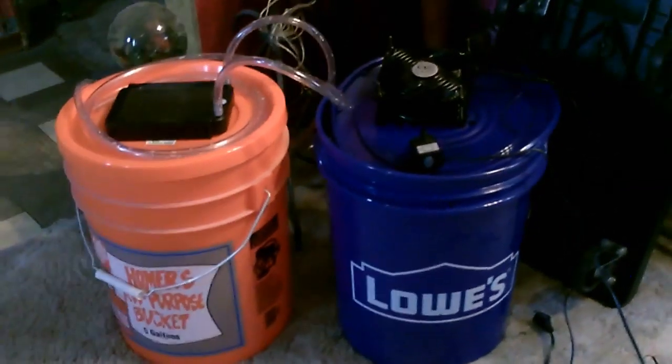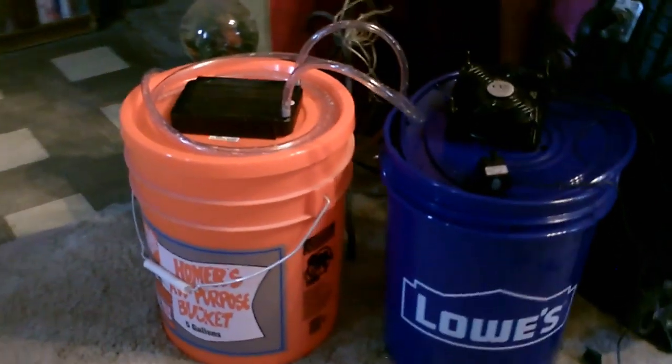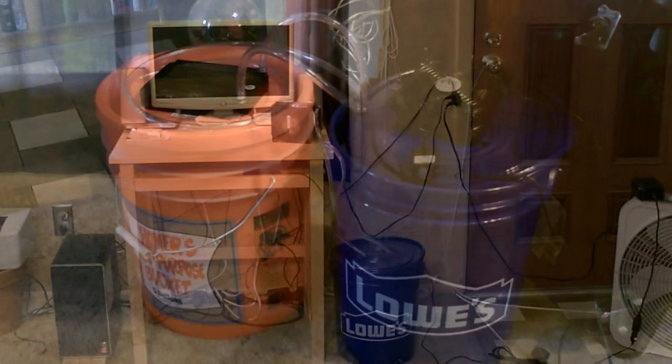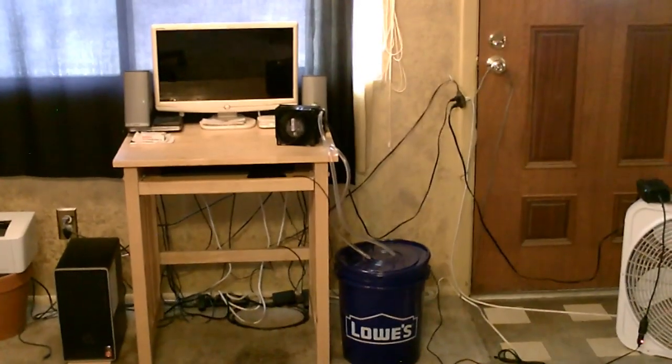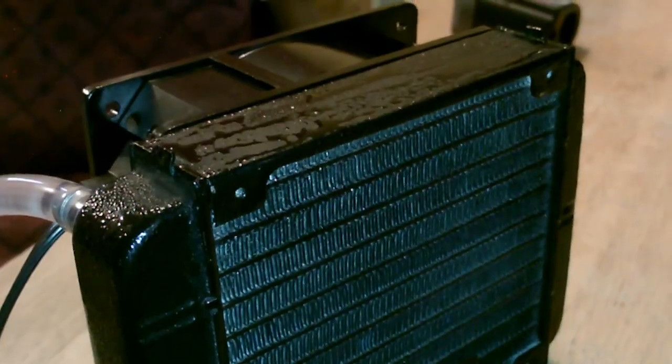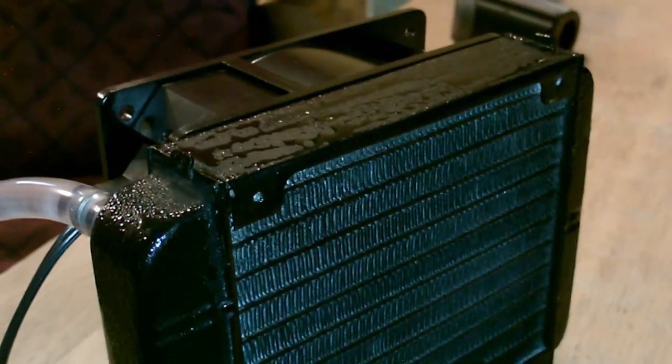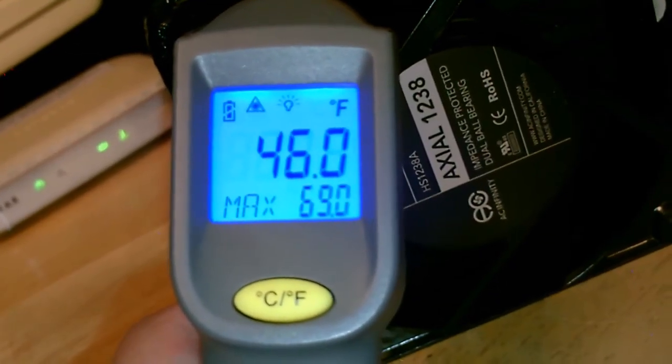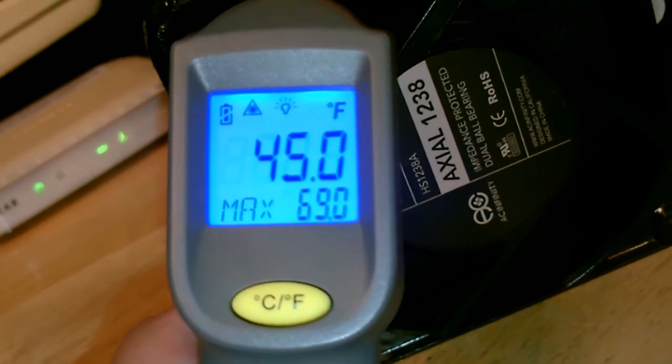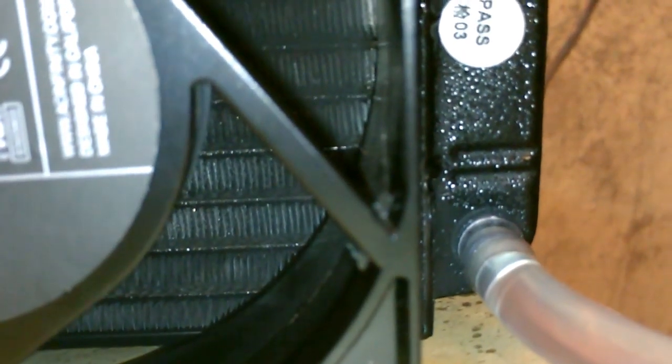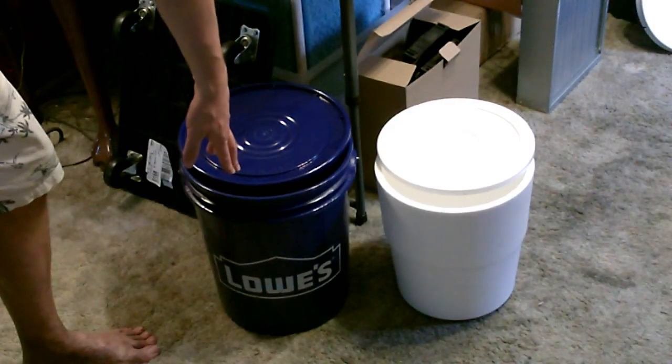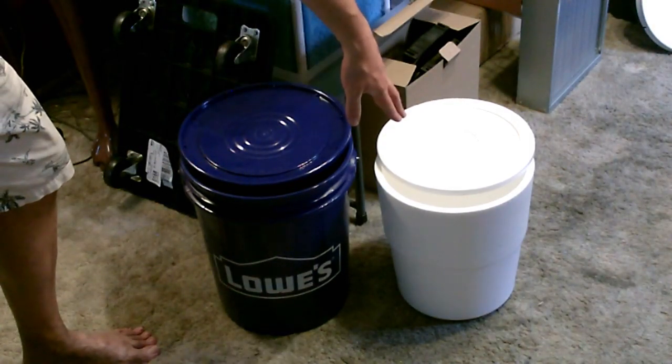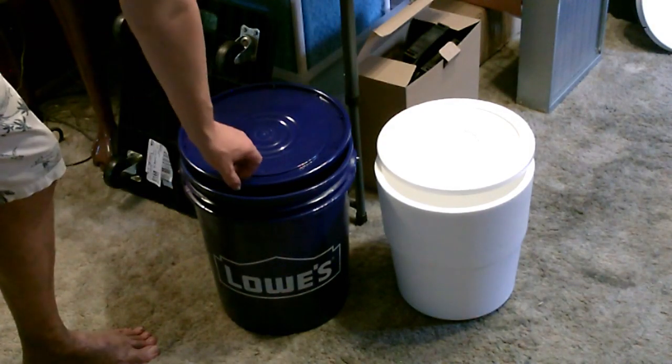Now I'm going to show it to you using one of these five-gallon bucket ice chests to hold the ice water. Just grab the five-gallon bucket, five-gallon bucket liner, and then we're just going to drill the holes in the top.